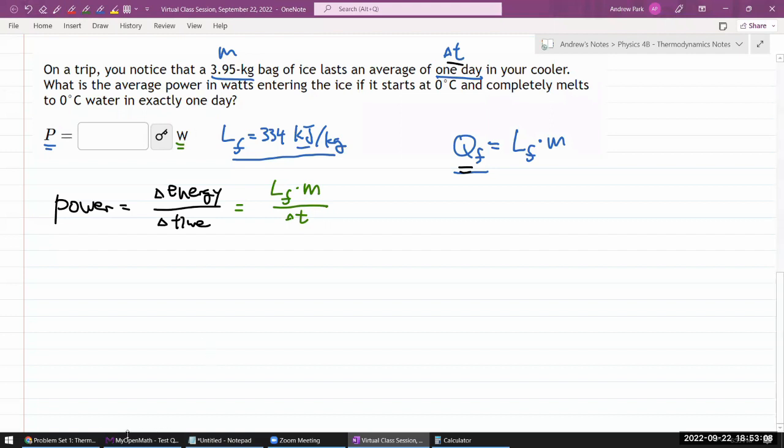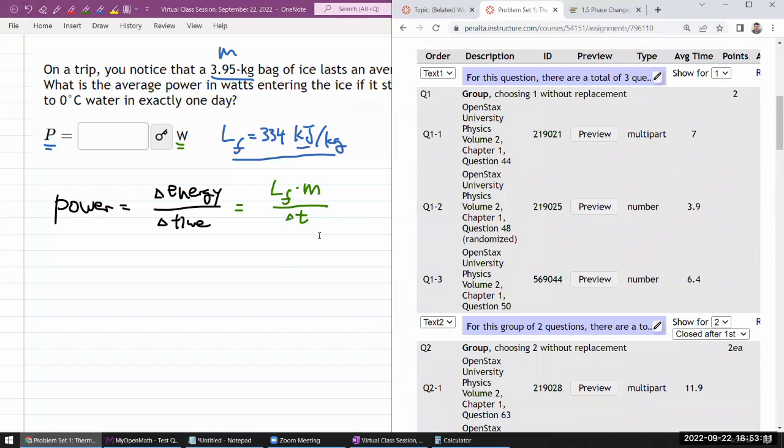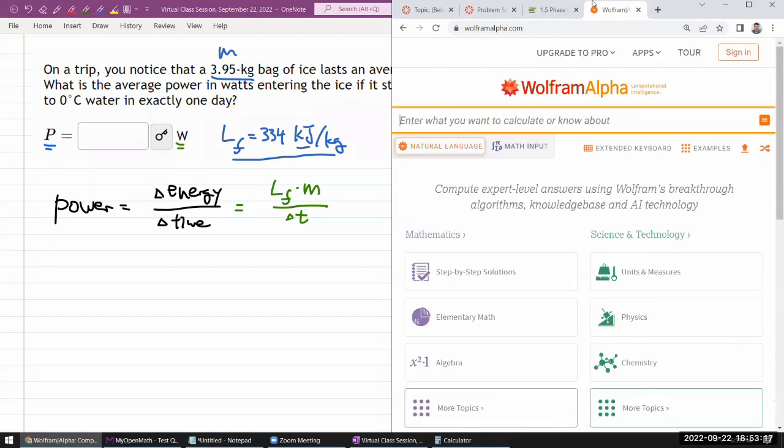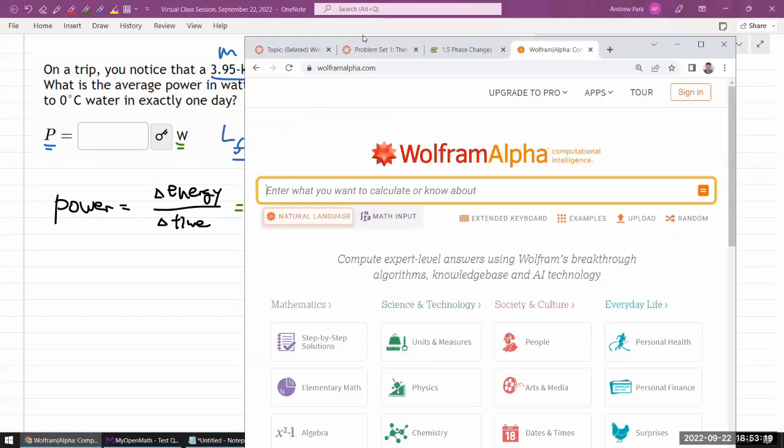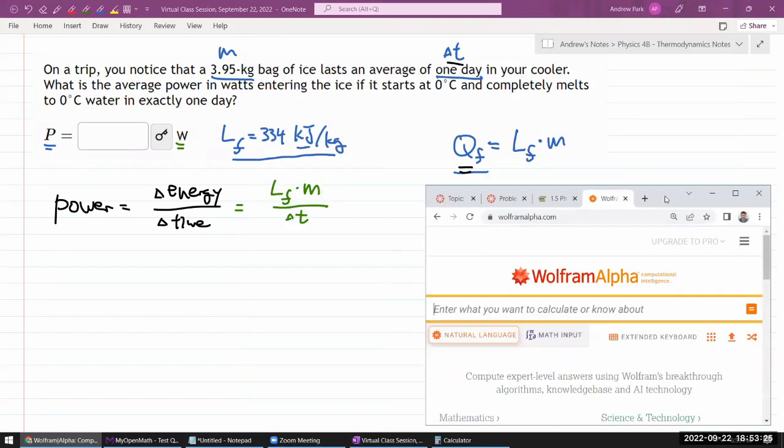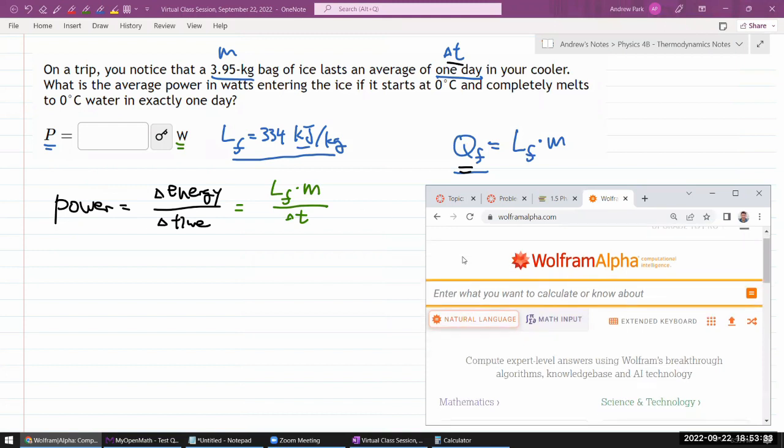Let me just show you one cool tool that you are allowed to use. It's called Wolfram Alpha. It's a great online calculator. One of the greatest things about it that most other calculators don't have is that it's aware of units. You can actually type in these quantities with all the units, and it will do all the conversions for you in the background. So let me type in latent heat of fusion of water, 334 kilojoules per kilogram, times the mass, 3.95 kilogram, divided by amount of time, 1 day.